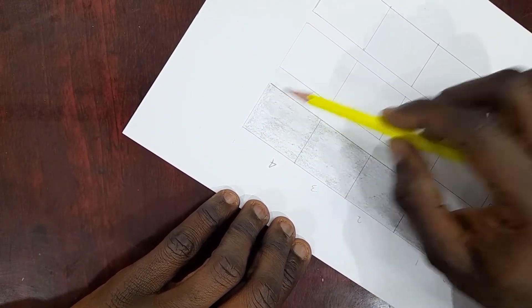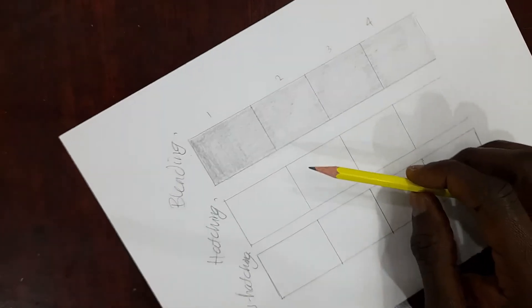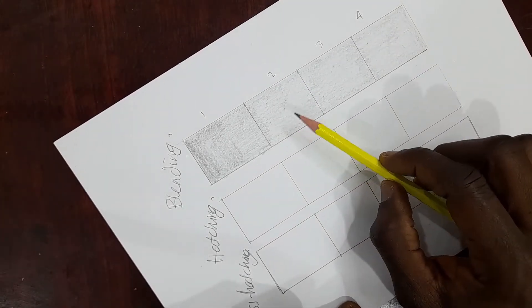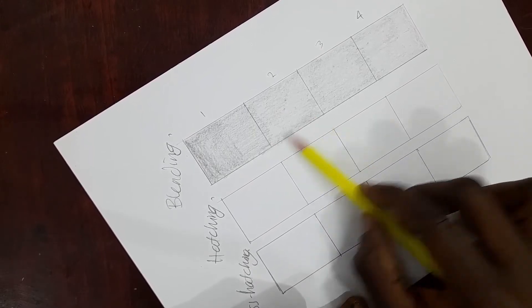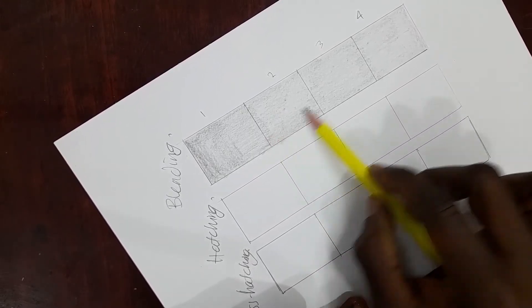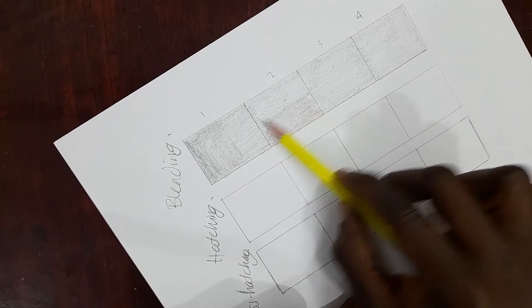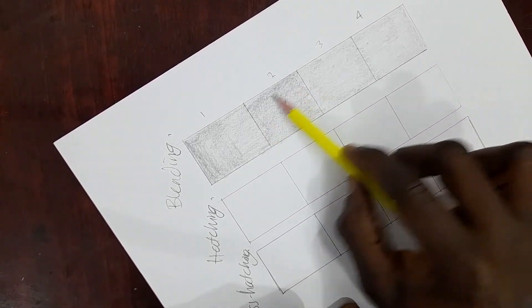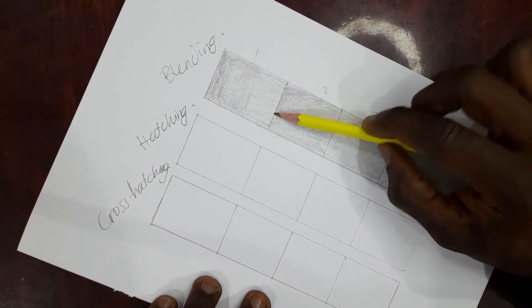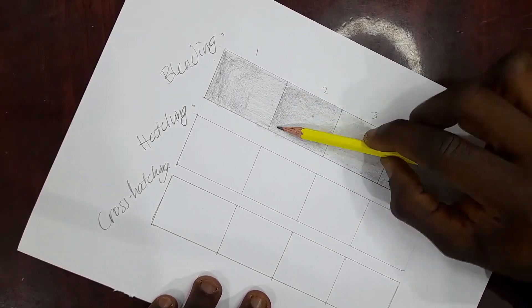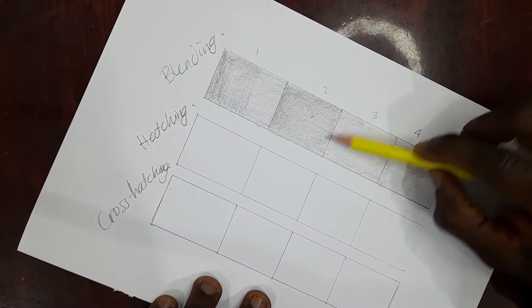The normal thing to do if you want to use blending technique and make it darker is to keep on rubbing layers. So this is my second box, so I'm putting another layer. I'm rubbing another layer on it to make it darker than the first box.